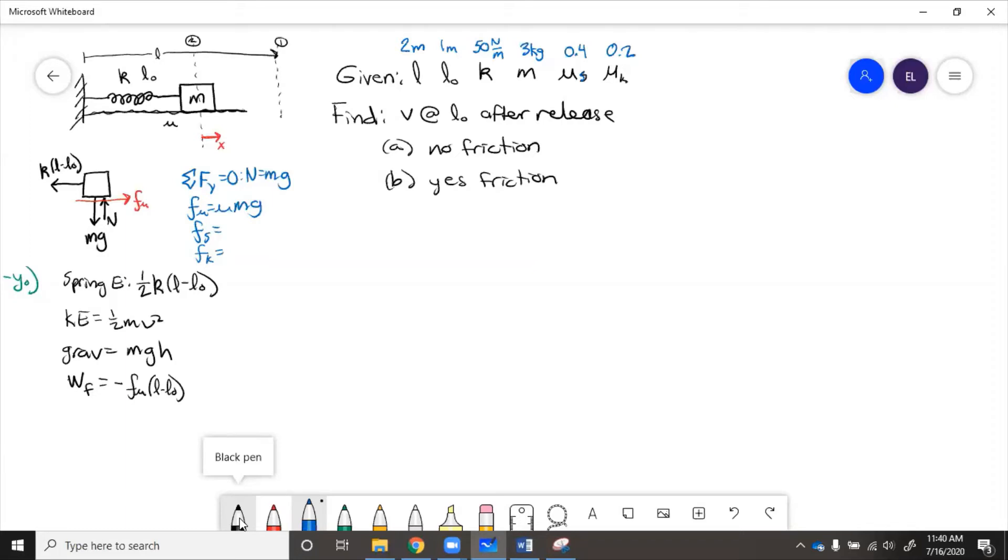So if n equals mg, then that's going to be 3 times 9.81, which equals 29.4. And then the static friction is 0.4 times that, so that's 11.8. And the kinetic friction is going to be 5.9. So these are all in newtons.